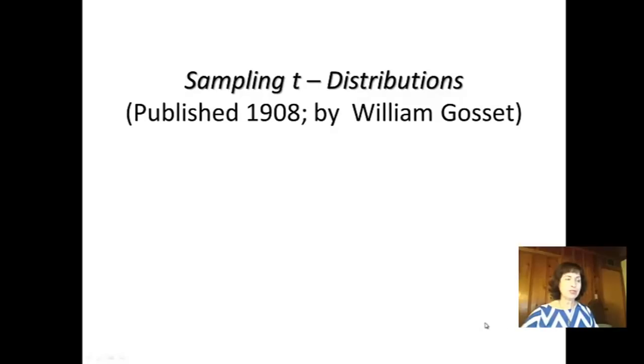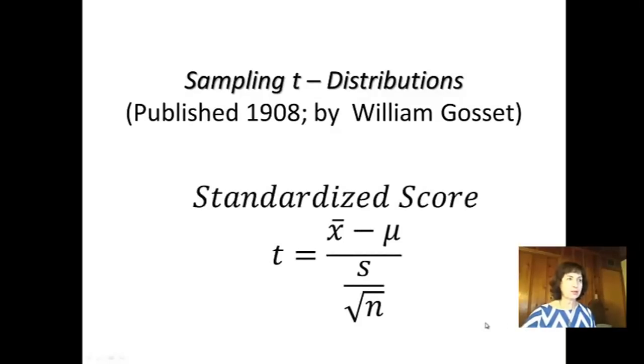In sampling t-distribution, we standardized scores. Instead of z-scores, we used t-scores. The only difference is that we used the standard deviation of the sample.